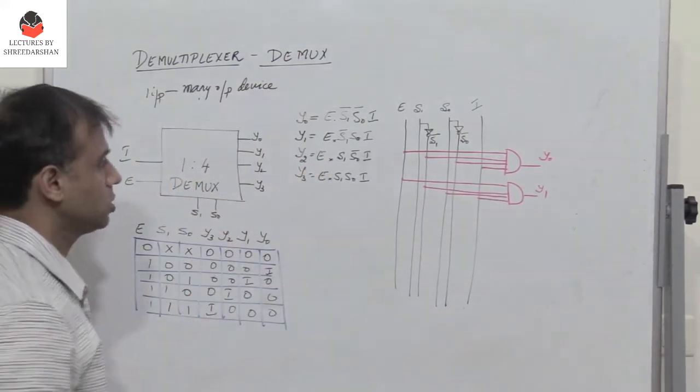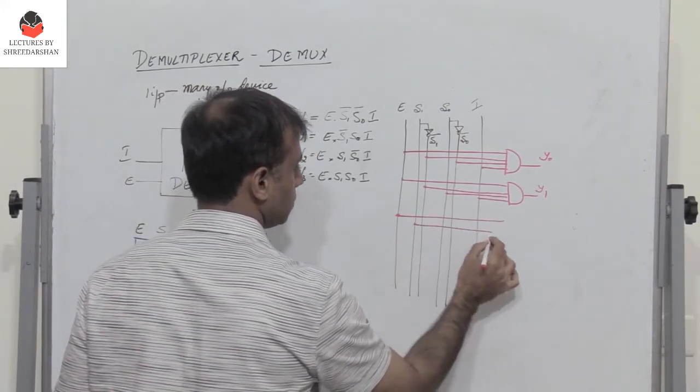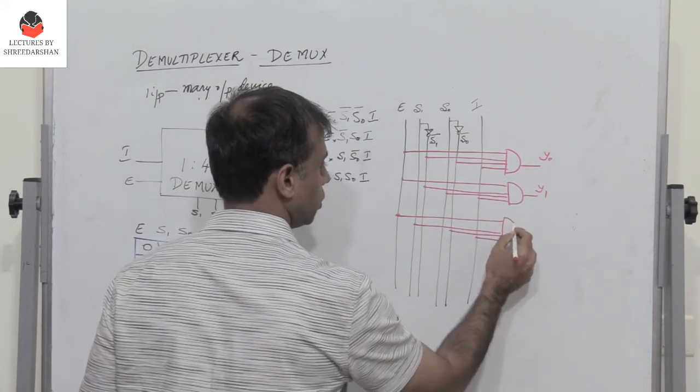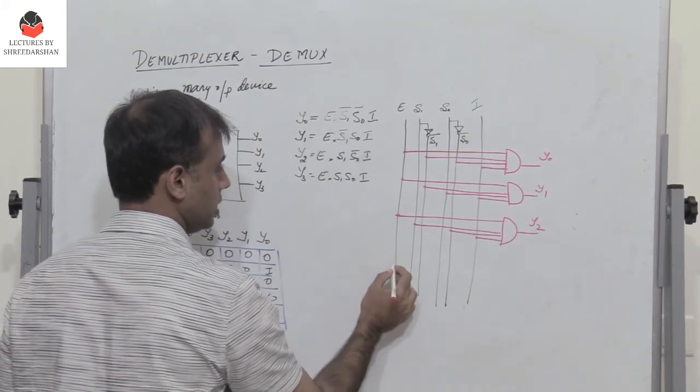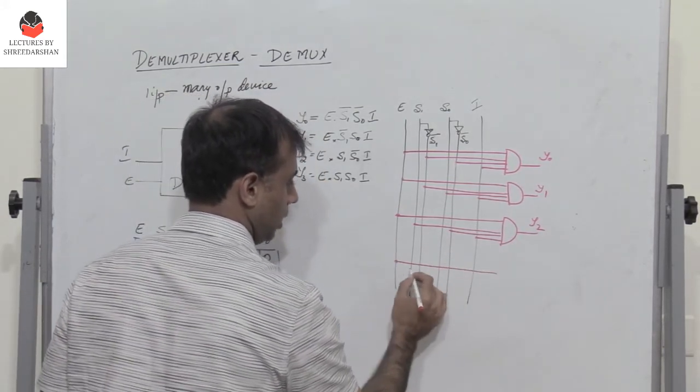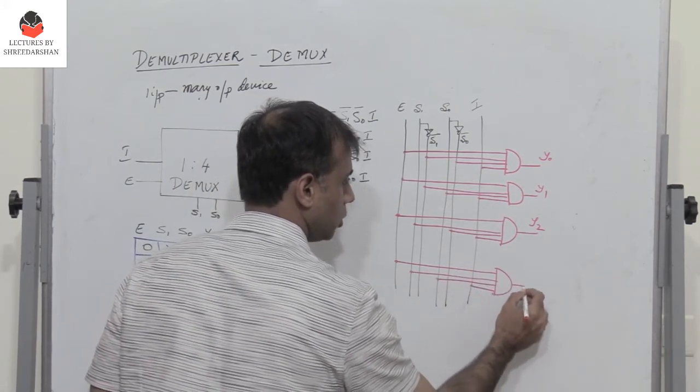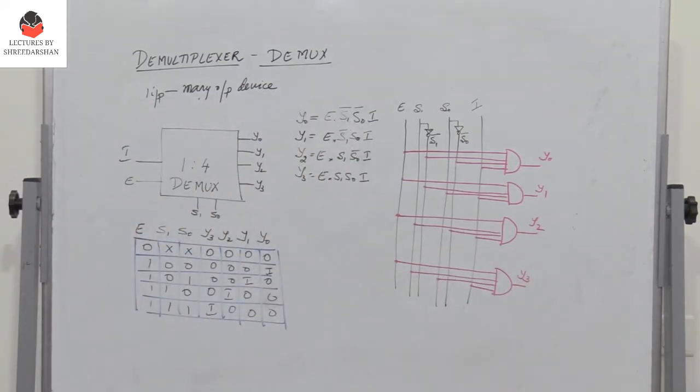Next, what is y2? You have e, and then you have s1, s0 bar, i pass it through a four input AND gate, you get y2. And then similarly, y3 is e, s1, s0, and i pass all of them through a four input AND gate, I get y3. So this is how we get the output y0, y1, y2, y3, which are the outputs of a 1 to 4 demux.